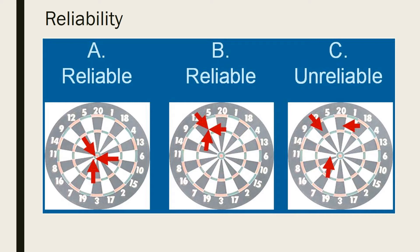Likewise, board B is also reliable because the darts landed together and are consistent. It is important to note that although board B is reliable, it is not valid because the darts did not hit the bullseye in the centre.